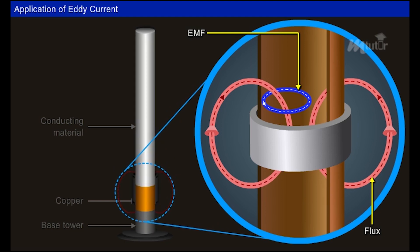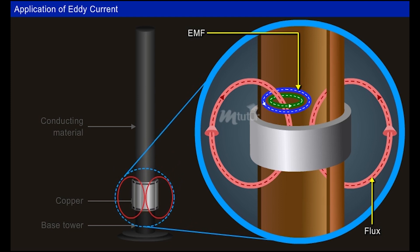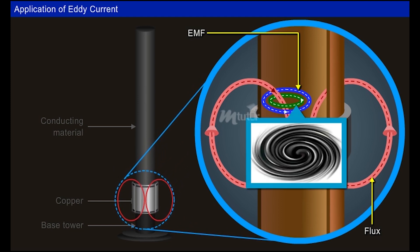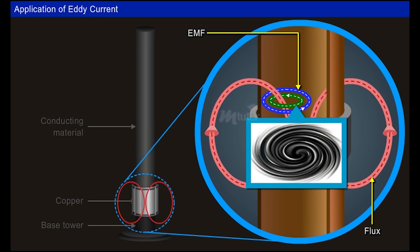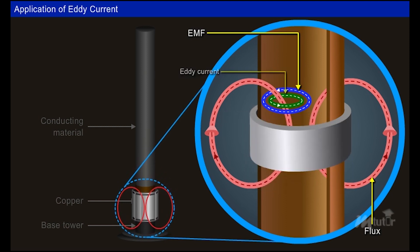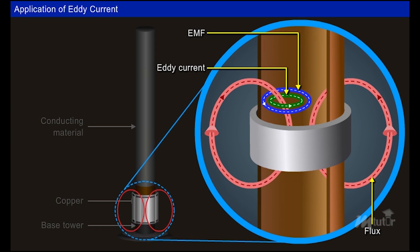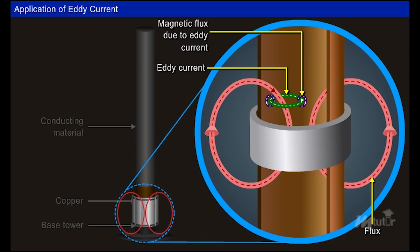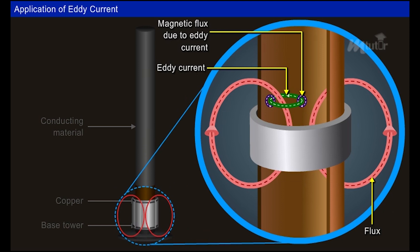As the tower forms a closed structure, the induced currents due to this EMF flow in circular paths resembling the swirling eddies formed in the rivers. Hence these currents are called eddy currents. The magnetic field due to eddy current decelerates the gondola and stops it at the end of copper part of the tower.